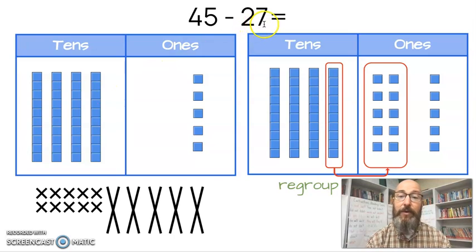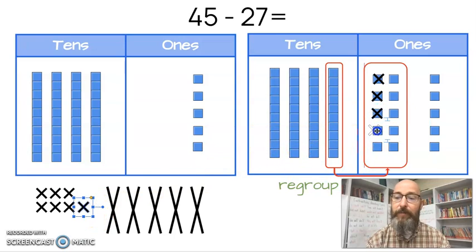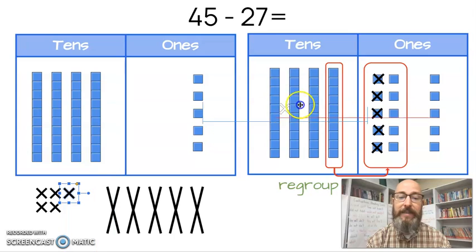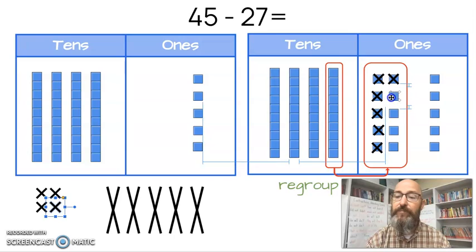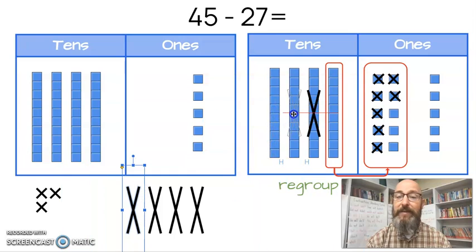Now, how many ones do I take away? Seven. So count with me. Let's take away seven. One, two, three, four, five, six, seven. So I took away my seven ones here. Now I'm going to take away how many tens? Two. There's a two in the tens place. So I'm going to take away two tens. There's one ten. I took it away. Here's another ten. I took it away. So those are gone.